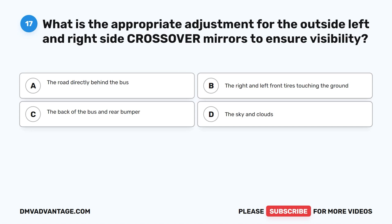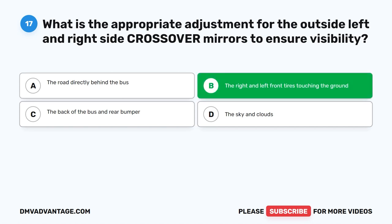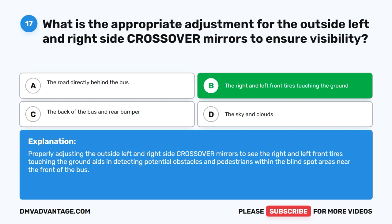Question 17. What is the appropriate adjustment for the outside left and right side crossover mirrors to ensure visibility? A. The road directly behind the bus. B. The right and left front tires touching the ground. C. The back of the bus and rear bumper. D. The sky and clouds. The correct answer is B. The right and left front tires touching the ground. Properly adjusting the crossover mirrors to see the right and left front tires touching the ground aids in detecting potential obstacles and pedestrians within the blind spot areas near the front of the bus.